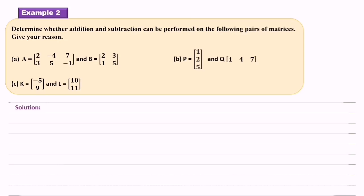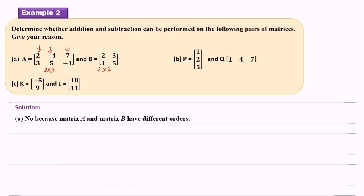A: Matrix A is 2 by 3 because it has 2 rows and 3 columns. Matrix B is 2 by 2. So can we add or subtract them? No, because matrix A and matrix B have different orders.